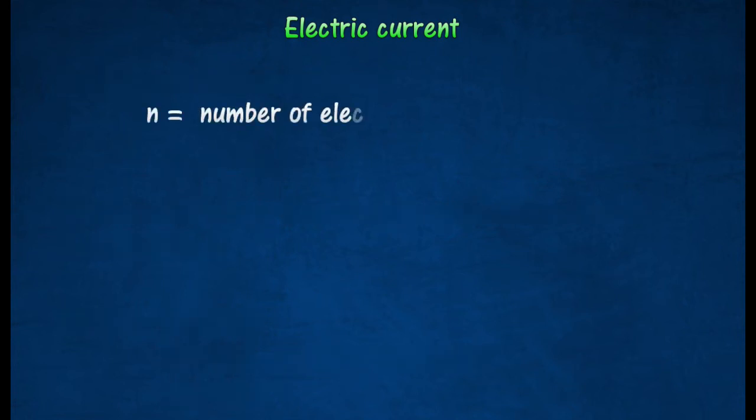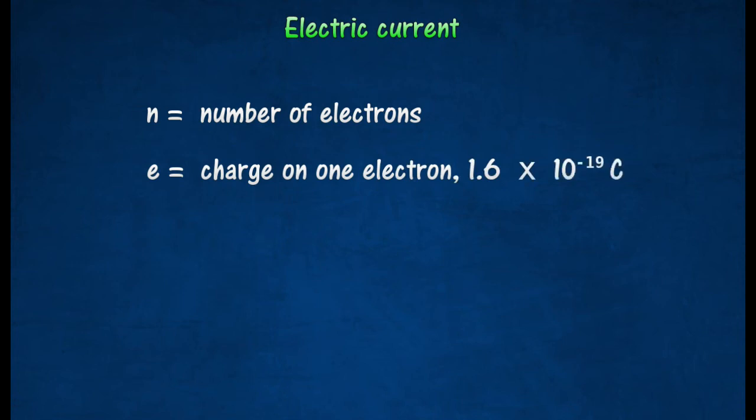Electric current is made up of flowing electrons. Each electron carries a negative charge of 1.6 times 10 power to negative 19 coulomb. Thus, the amount of charge Q that flows through a conductor is given by N times E.